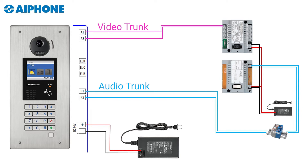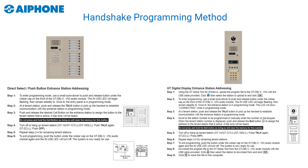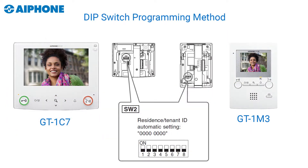Now let's start installing our apartment stations. The first thing you need to decide is how you're going to program the system. There are two ways: the handshake method, which requires two technicians — one at the entry panel and one in each individual apartment — to make a mechanical handshake with the system. The next method is called the dip switch method.